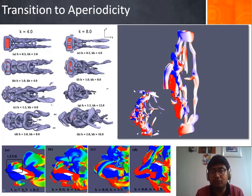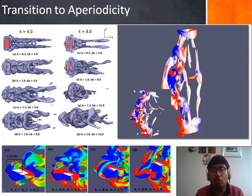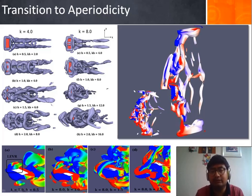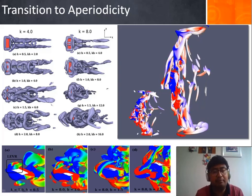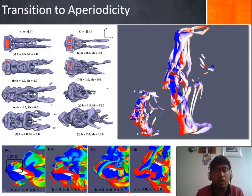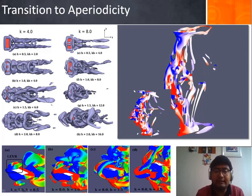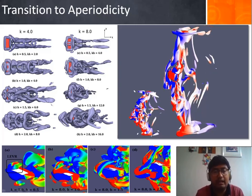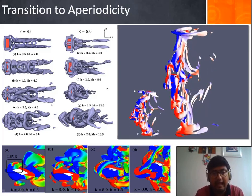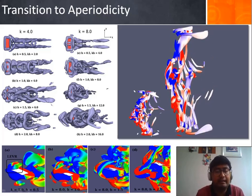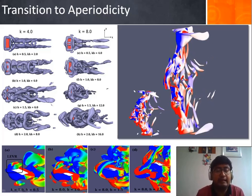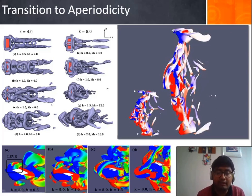Interestingly, it can be seen that the leading edge vortex ring also undergoes a similar aperiodic transition as the KH increases. This is found to be the primary trigger in introducing the aperiodicity in the flow field, similar to the 2D case.